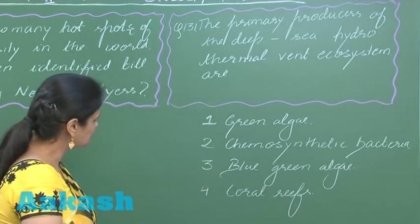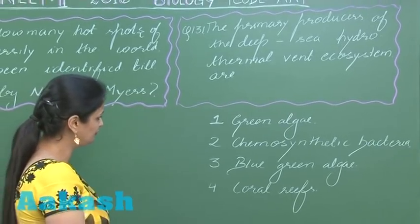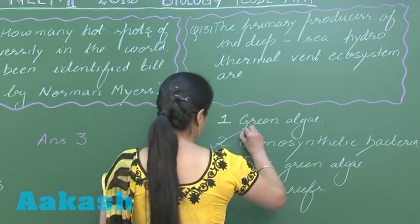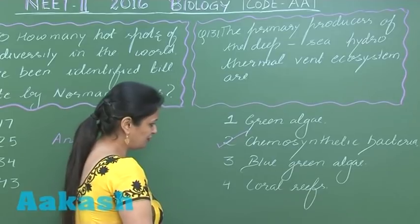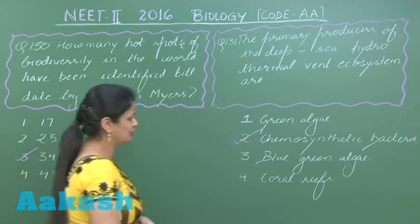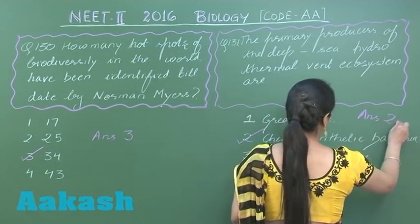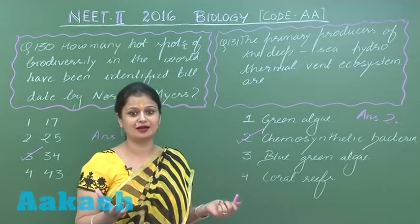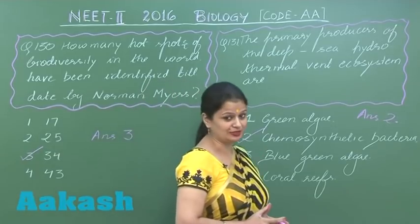Under such conditions, the producers that can survive are chemoautotrophs rather than photoautotrophs. Looking at the options: green algae — no, it's a photoautotroph. Chemosynthetic bacteria — this is the right option. Blue green algae — again a photoautotroph. So the right option for question 131 is option number 2. The chemosynthetic bacteria present there are archaebacteria.